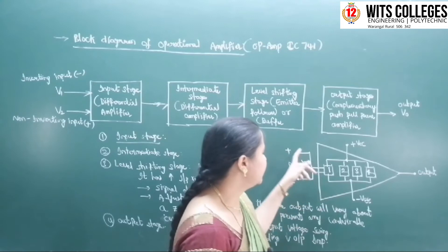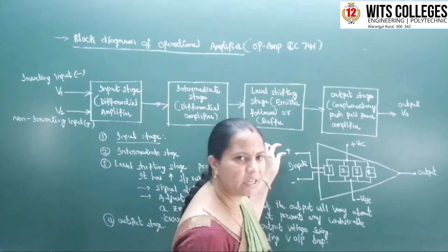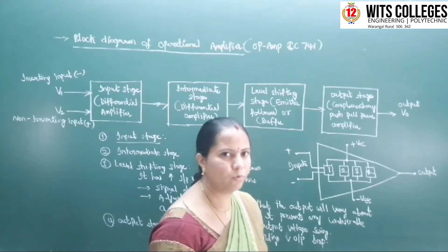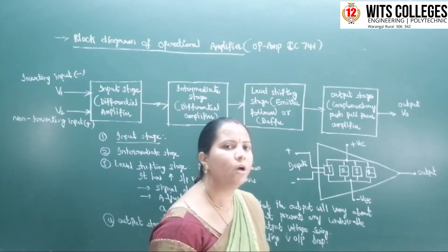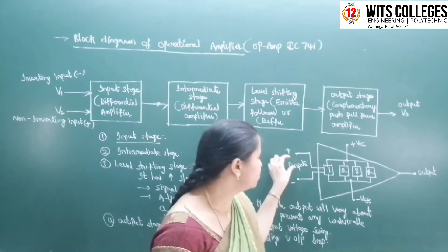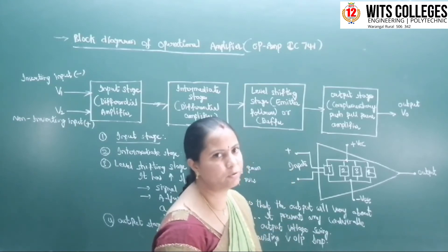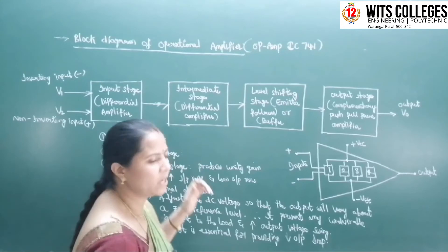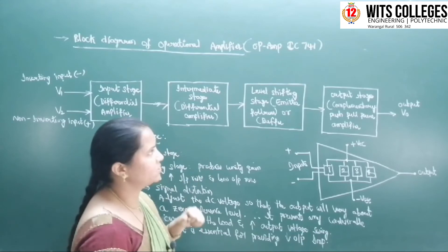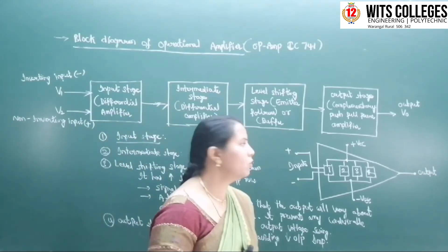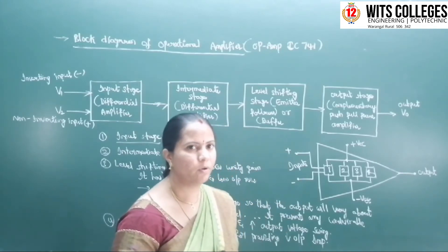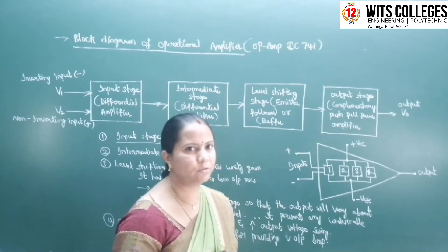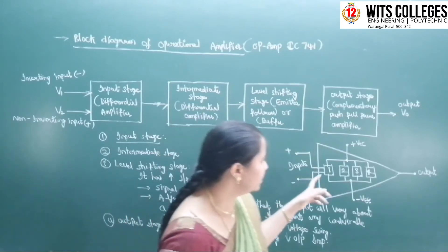In the block diagram of the operational amplifier, we have four stages and two inputs — inverting input indicated by negative, and non-inverting input indicated by positive. The differential amplifier accepts two input signals, voltage one and voltage two, and amplifies the difference. To summarize: the first stage is the input stage (differential amplifier), the second is another differential amplifier stage, the third is the level shifting stage acting as emitter follower or buffer, and the fourth is the complementary push-pull power amplifier output stage.